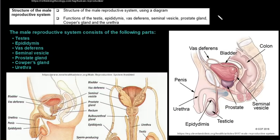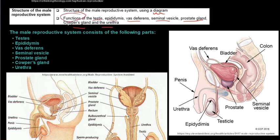Looking at the male reproductive system, you need to be able to label this diagram — you don't need to draw it as it is quite complex. You need to be able to label the testes, the epididymis, the vas deferens, the seminal vesicle, the prostate gland, the Cowper's gland, and the urethra. You also need to know the functions of these different parts.